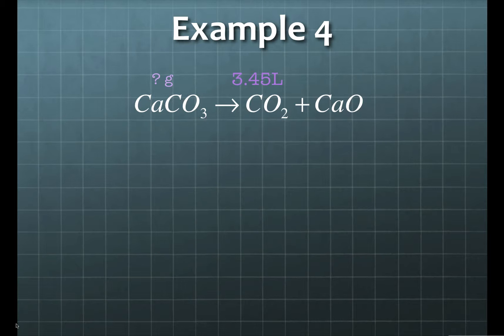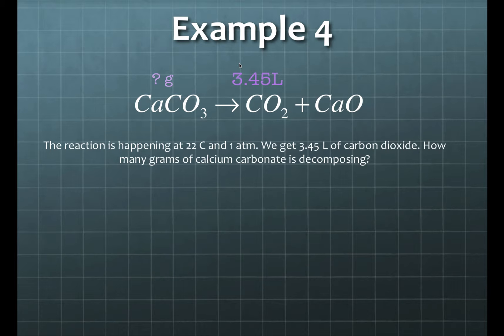Our last problem in class was the one that I just dictated to you, and you were supposed to make up the equation. So calcium carbonate is decomposing into carbon dioxide and calcium oxide. We figured out that calcium oxide has a formula CaO because the charge in calcium is plus 2, and the charge in oxygen is 2 minus. This reaction takes place at 22 degrees Celsius at one atmosphere, we get 3.45 liters of carbon dioxide, and we need to know the mass of calcium carbonate that decomposed.